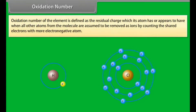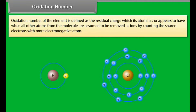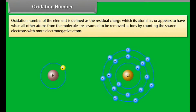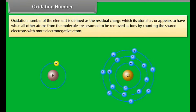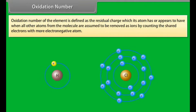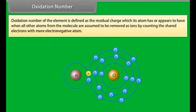Oxidation number of an element is defined as the residual charge which its atom has or appears to have when all other atoms from the molecule are assumed to be removed as ions, by counting the shared electrons with more electronegative atoms. For example, in hydrogen chloride, chlorine is more electronegative than hydrogen. Therefore, the shared pair is counted towards chlorine. Chlorine gets one extra electron and acquires a unit-negative charge; hence, its oxidation number is −1. Hydrogen, without its electron, has a unit-positive charge; hence, the oxidation number of hydrogen in HCl is +1.